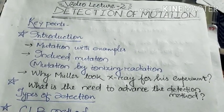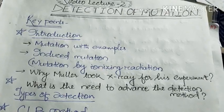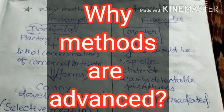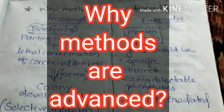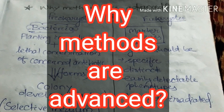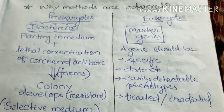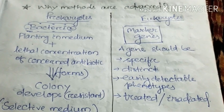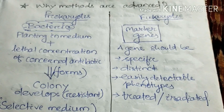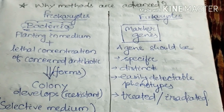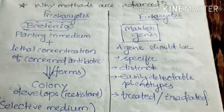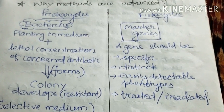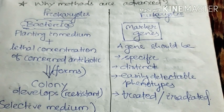As we all know, organisms are of two types: prokaryotes and eukaryotes. This difference is relevant to the method of detection and explains why methods are more advanced — or what is the need to advance the detection method.